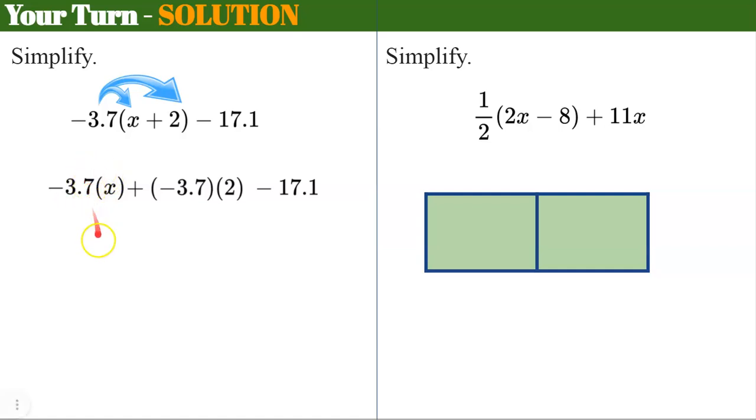So to simplify this, we get negative 3.7x, negative 3.7 times 2 is negative 7.4, and we have our subtract 17.1.